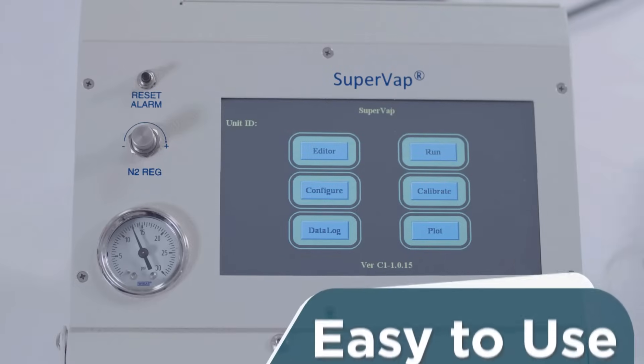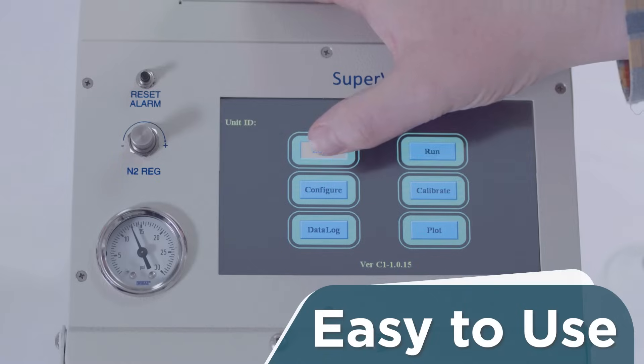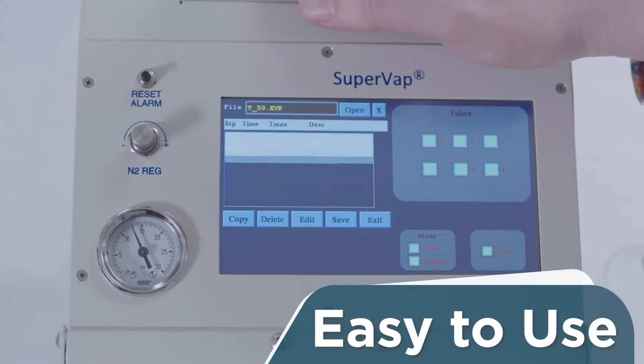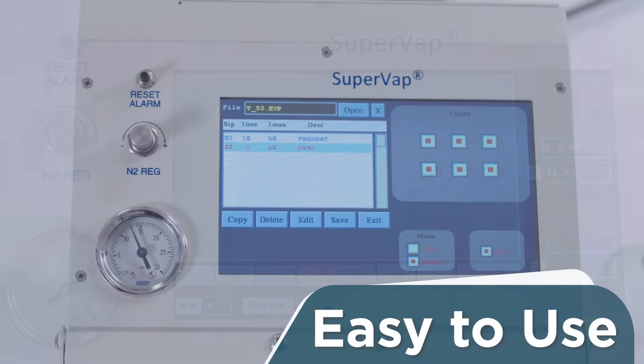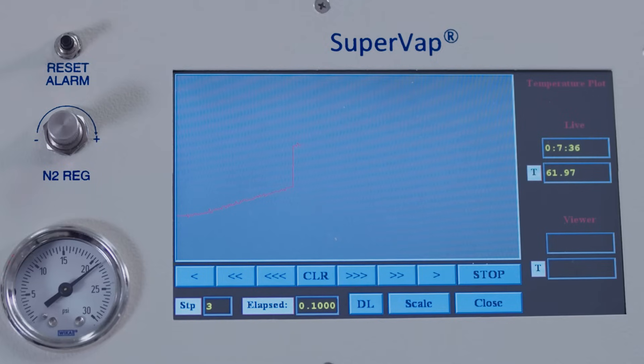The SupraVap uses a touchscreen display for programming, storing, and running methods. Real-time plotting and display of temperature is logged throughout the process. Touch a point on the plot and instantly see the temperature of that point.